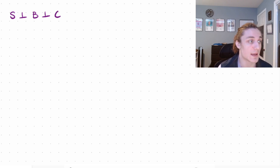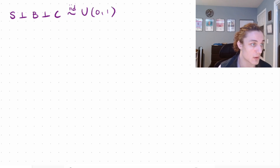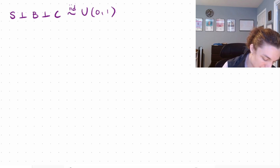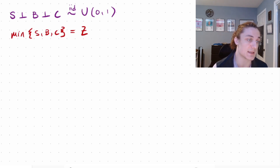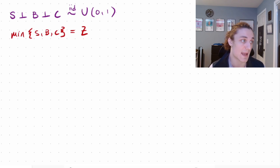Let's look at the problem setup. Assume I have a portfolio of stocks, bonds, and crypto, and we're going to say that their annual return is IID — independent and identically distributed — standard uniform. We may be interested in the minimum of S, B, and C, and we call this random variable Z. Hopefully it's clear that Z is a random variable because it is a function of random variables S, B, and C.